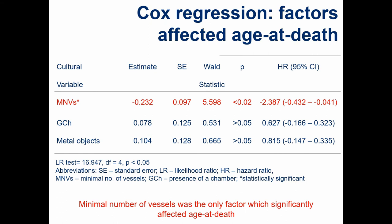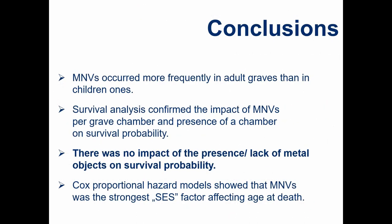The second question was: if there is a group of cultural variables influencing survival probability, which of them had the strongest impact on age at death? For this we used Cox's proportional hazard models. For these three cultural variables, I first checked the impact of minimal numbers of vessels on age at death, then added further cultural variables. Focusing on the red-marked line: the strongest statistically significant impact on age at death was caused by minimal number of vessels, with a Wald statistic p-value of 5.6. Minimal number of vessels was the only factor significantly influencing age at death.